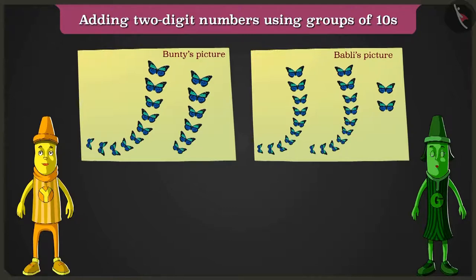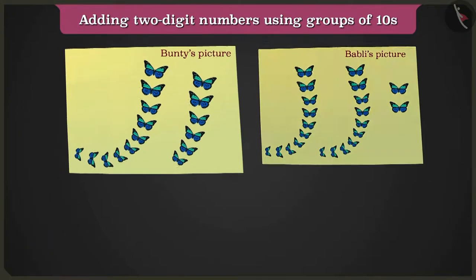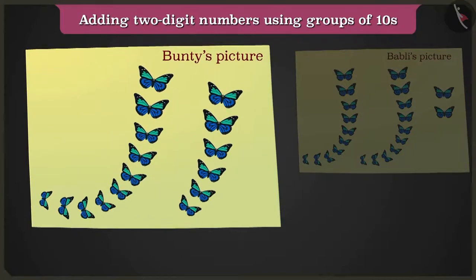Hey Yellow, look at this picture of butterflies. Here on Bunty's drawing paper, there are one, two, three, four, five, six, seven, eight, nine and ten. Here is a group of ten. And another one, two, three, four, five and six butterflies.